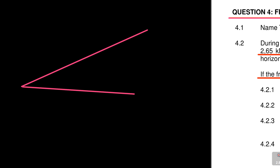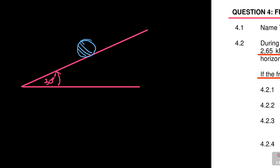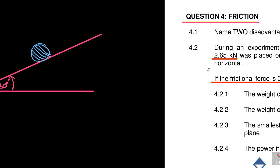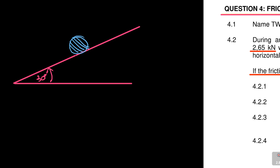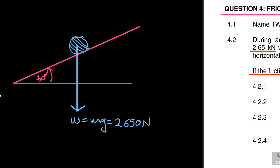So let's sketch this quickly. You've got an incline like this and they're telling you this incline is at an angle of 30 degrees. There is a block here — this is the block and it's weighing 2.5 kilonewtons. You have to convert that: kilo means times 10 to the power 3, so going down here our weight is equal to mg, which is 2,650 newtons.